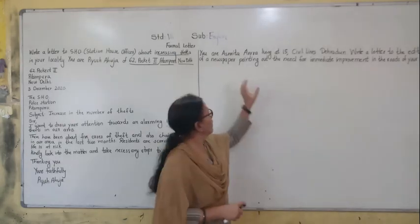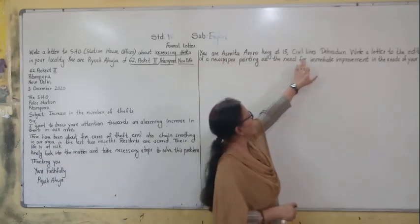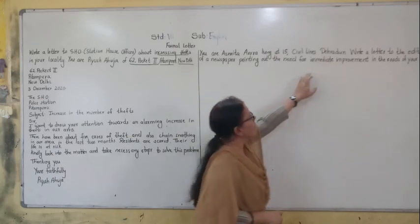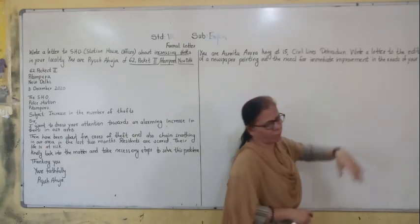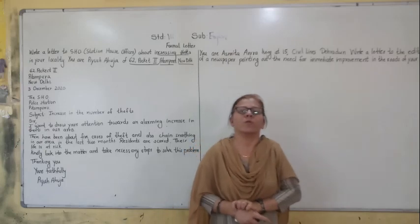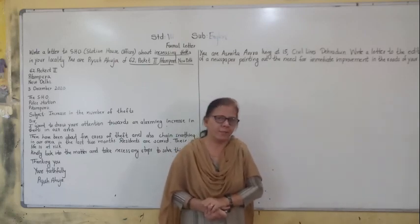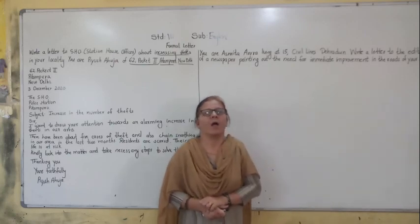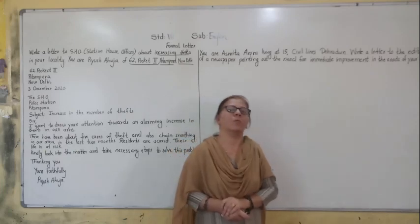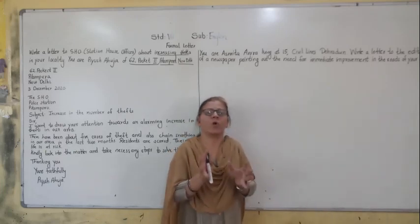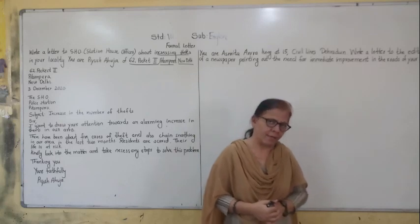Now the next letter is a letter to the editor. You are Asmita Arora, living at 15 Civil Lines. Write to the editor of a newspaper pointing out the need for immediate improvement in the roads of your society. The roads are not in good condition, so you have to write a letter to the editor to be published in the newspaper to draw the attention of the concerned authority and ask them to solve the problem at the earliest.